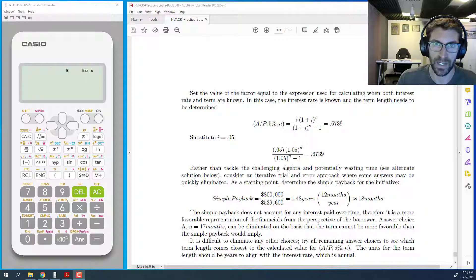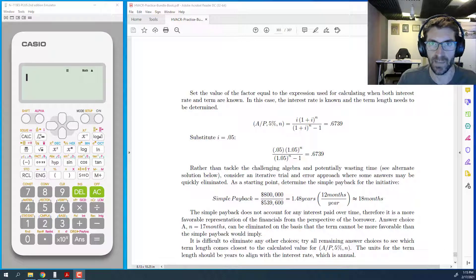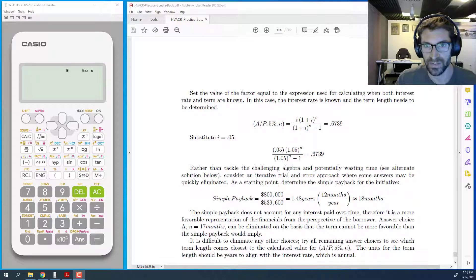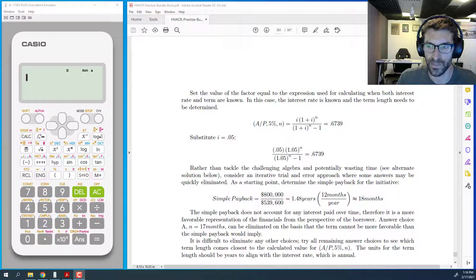If you haven't checked that out already, head on over to mechanicalpeexamprep.com and take a look at the full access bundle. It's the fastest, most efficient way to get on track to becoming a licensed PE in the area of HVAC and refrigeration.